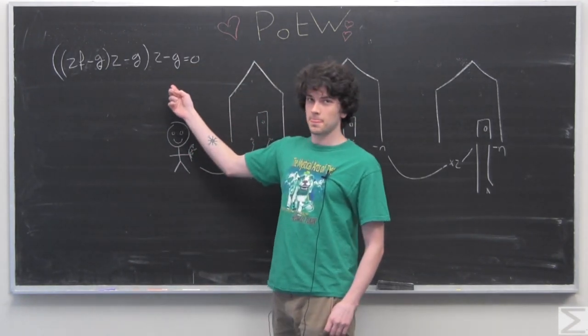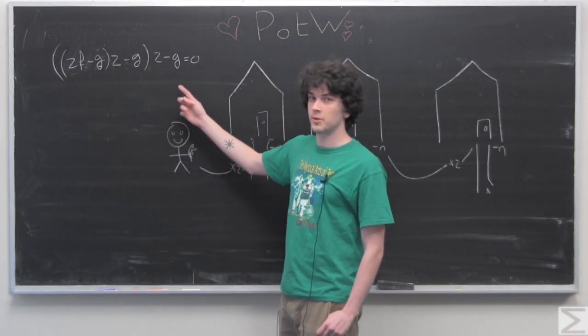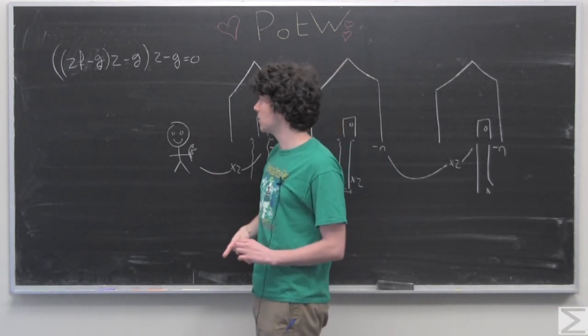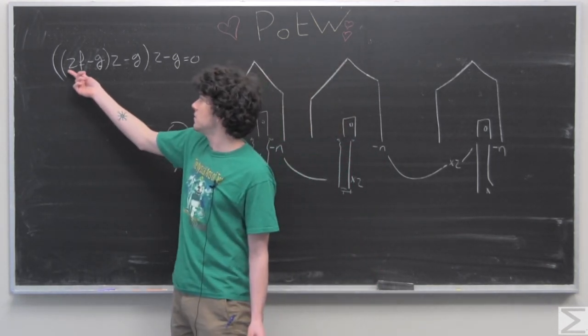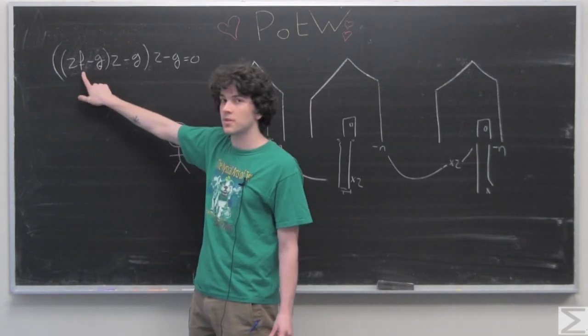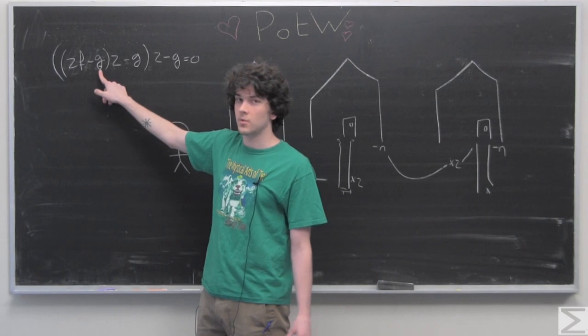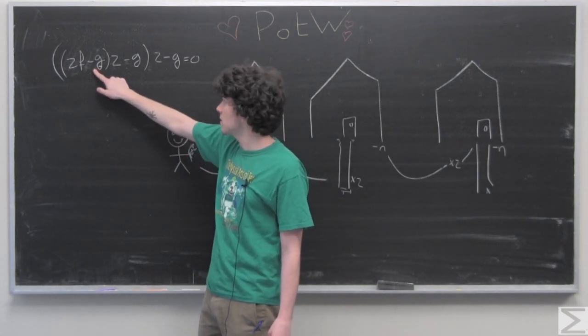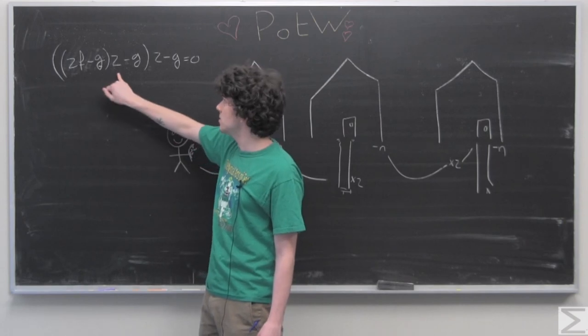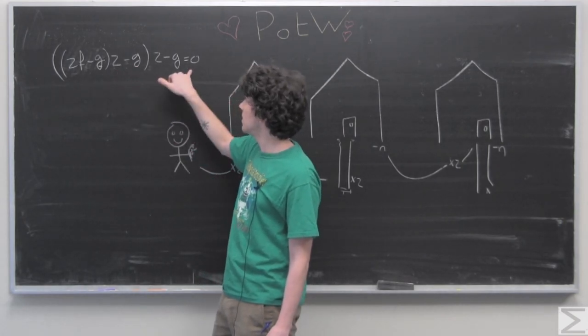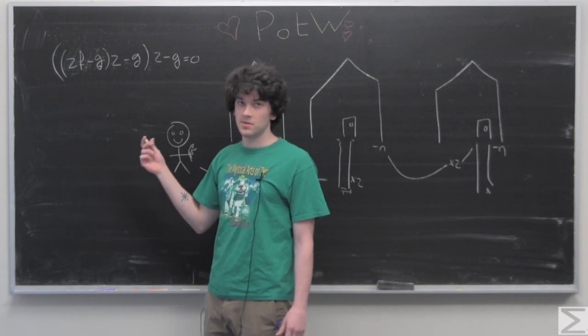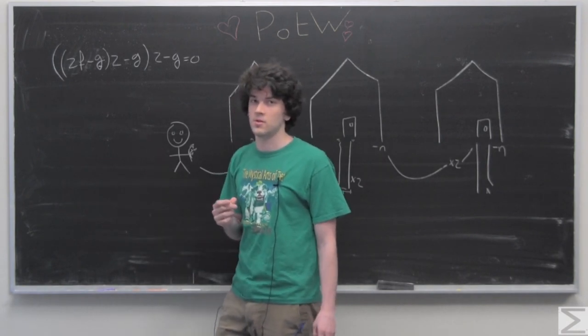So here we have an equation that's not very easy to work with. We'll have f be our starting number of flowers, and g be the number that we give to each house. So 2f minus g, that times 2 minus g, that times 2 minus g equals zero. What we're going to do is simplify this equation.